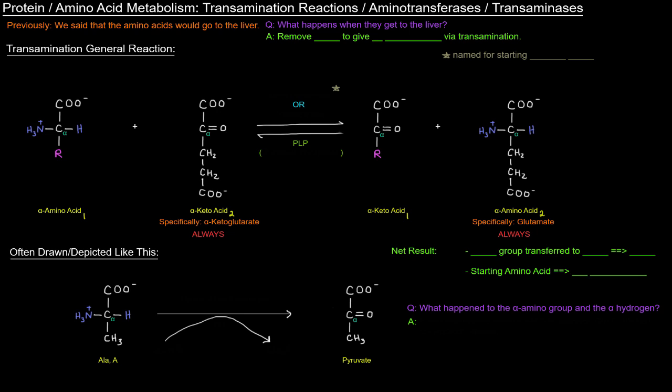Well we need to get their carbon skeletons. So we have to remove the nitrogen, the ammonium ion, to give what's called the carbon skeleton. And we're going to get that via transamination.